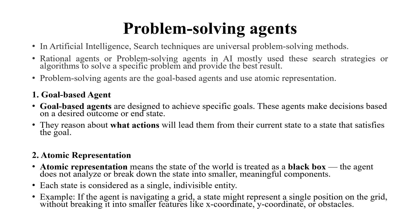These agents are goal-based agents and they use atomic representation. Goal-based agents are designed to achieve specific goals, and these agents make decisions based on the desired outcome or aim state. Actions should lead us from our current state to the goal state. This is what a goal-based agent does.